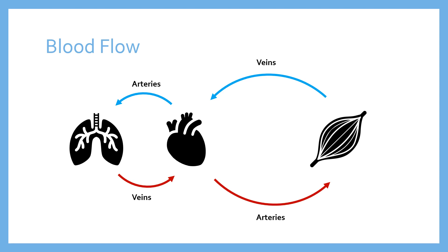That's done by a specialised set of vessels called capillaries. Blood flow happens in this order: heart, arteries, lungs — then the capillaries transfer blood from the arteries to the veins, which flow back to the heart. Then from the heart to the muscle, blood travels through arteries, dissipates through capillaries, re-emerges into veins, and returns to the heart. Let's look at arteries, capillaries, and veins and figure out how each is specialised for its particular job.